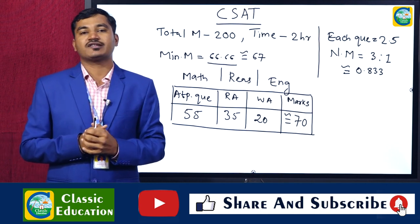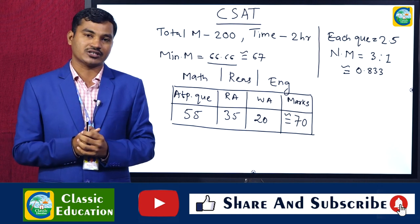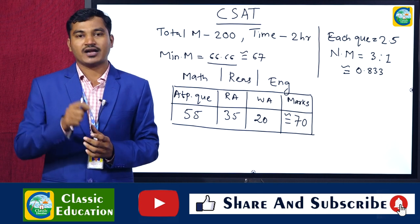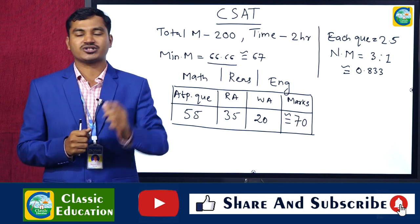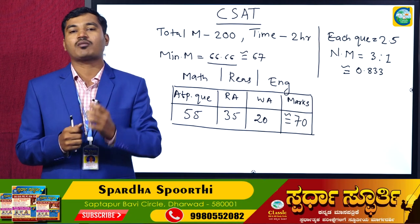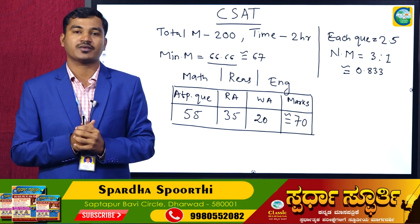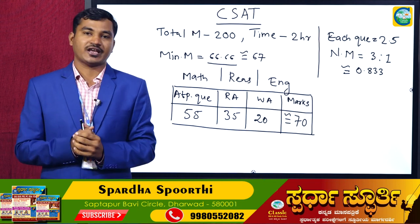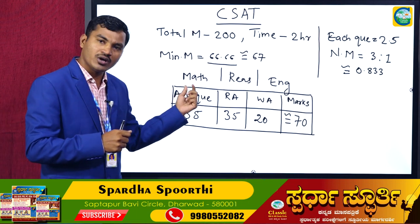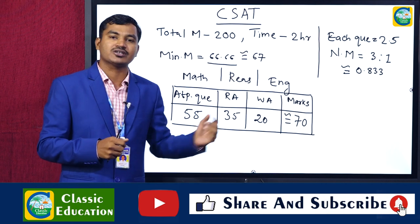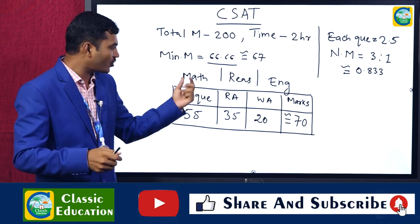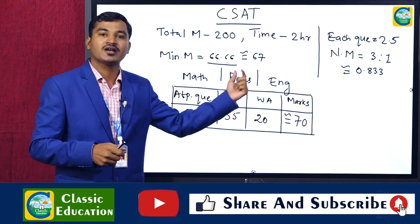For example, in the 2020 examination, there was one simple question: the product of two numbers is 21 and the sum is 10. We do not need maximum time to solve this; it was asked in the form of a data sufficiency type question. Such questions need less time, and we have to do these first. I am not telling you to do only Maths first or reasoning or English — you do any subject you are strong in, whether Maths, Reasoning, or English.